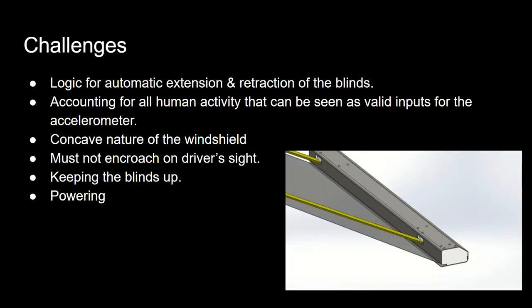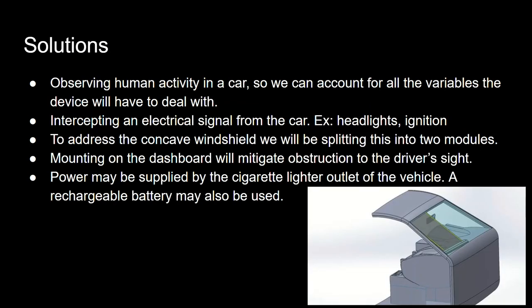Functions: logic for automatic extension and retraction of blinds, accounting for all human activity that can be seen as valid inputs for the accelerometer. Considerations include the concave nature of the windshield, ensuring the blinds must not encroach on the driver's sight, keeping the blinds up, and powering the device. Solutions include observing human activity in a car so we can account for all the variables the device will have to deal with.